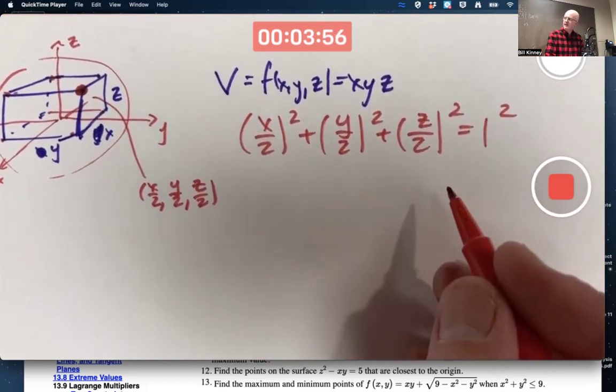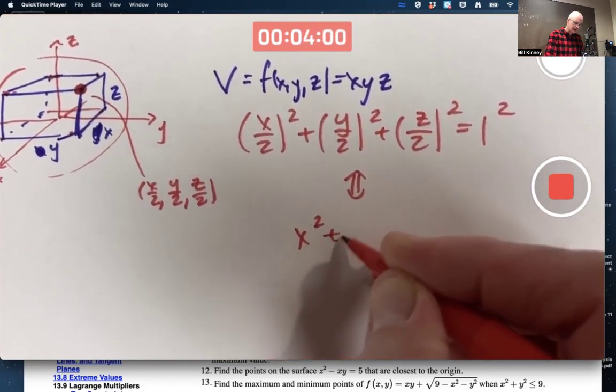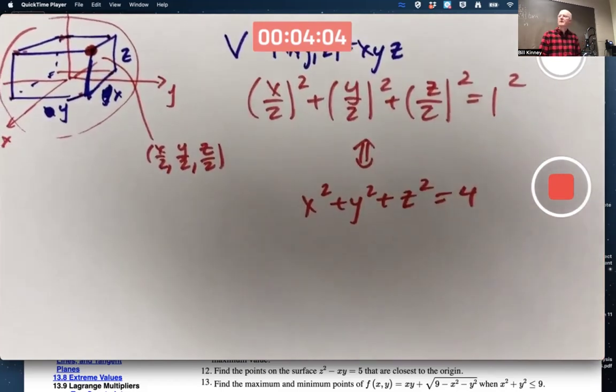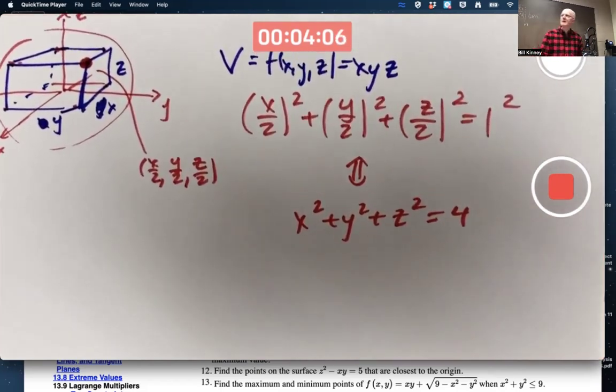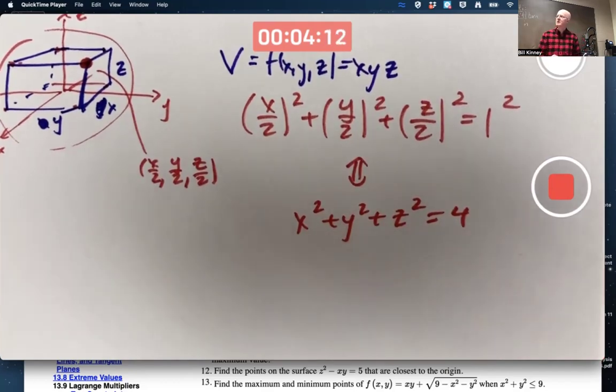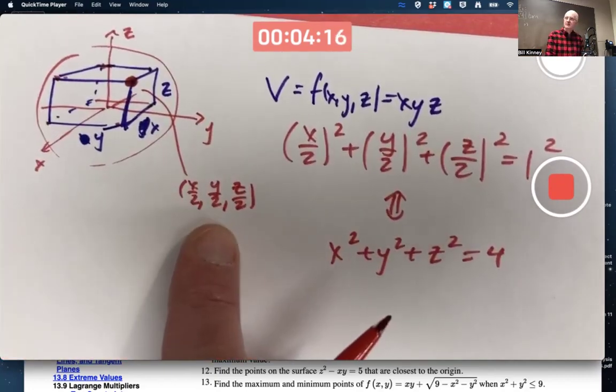Square those things, you're going to get a bunch of 4s in the denominator. So this is equivalent to X squared plus Y squared plus Z squared equals 4 after you multiply everything by 4. So we're not on the sphere of radius 2, we're on the sphere of radius 1. But if the box is centered at the origin, again, the coordinates at that point are going to be a bunch of X divided by 2s.